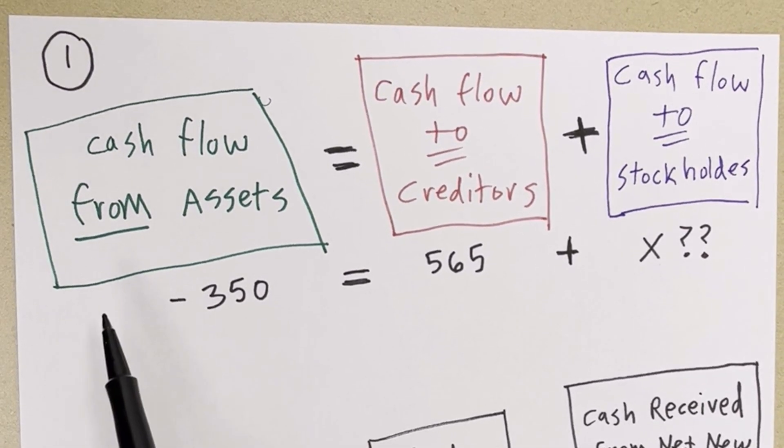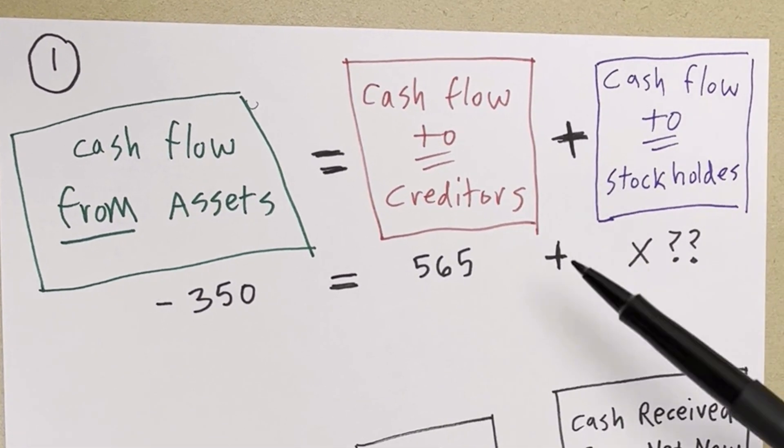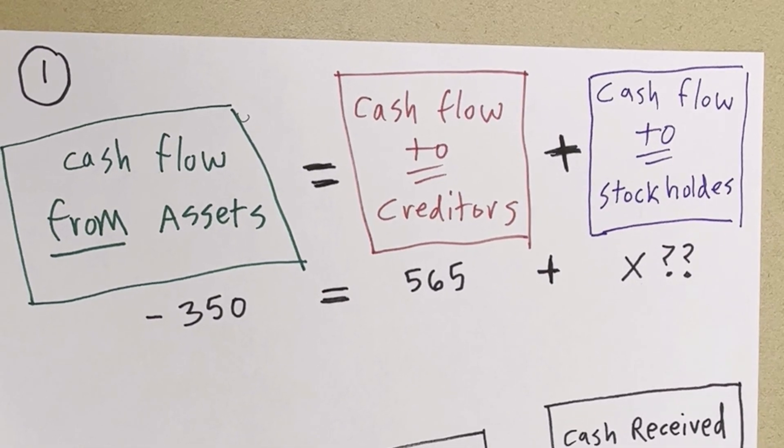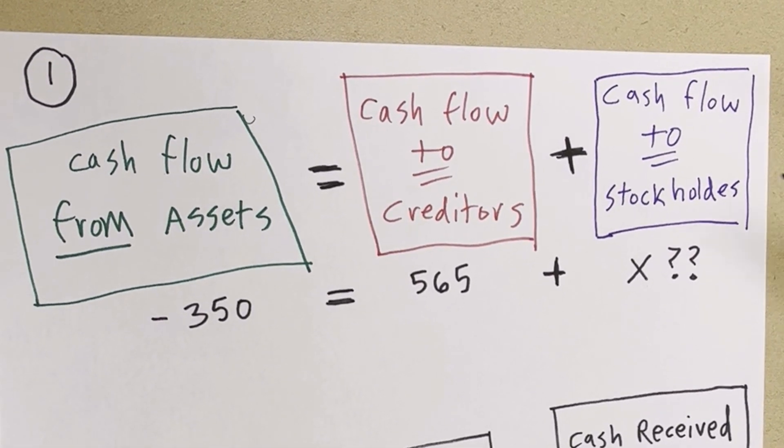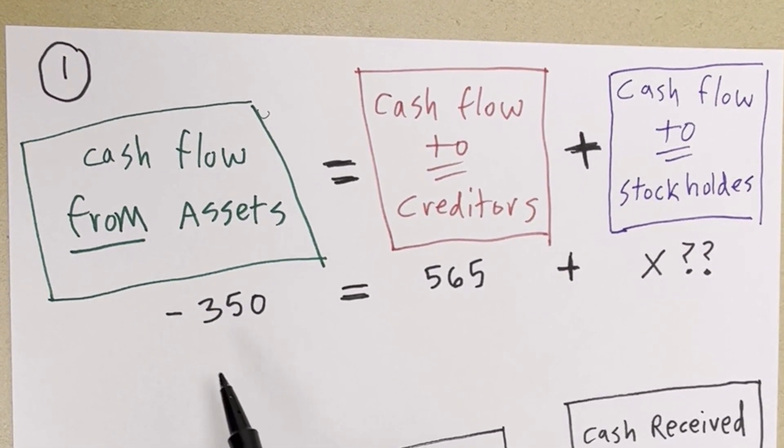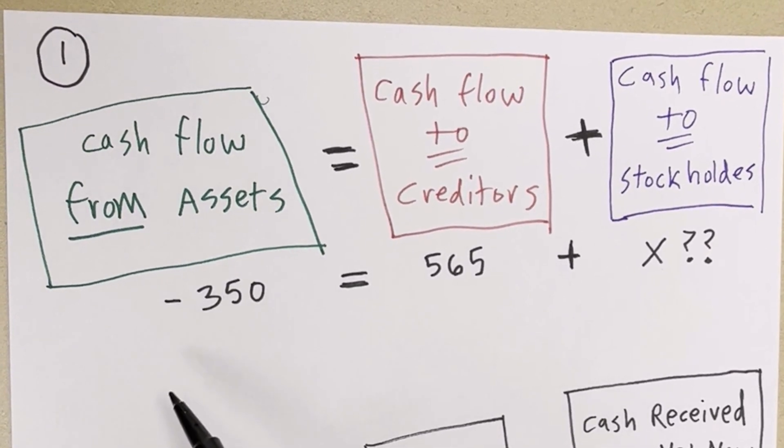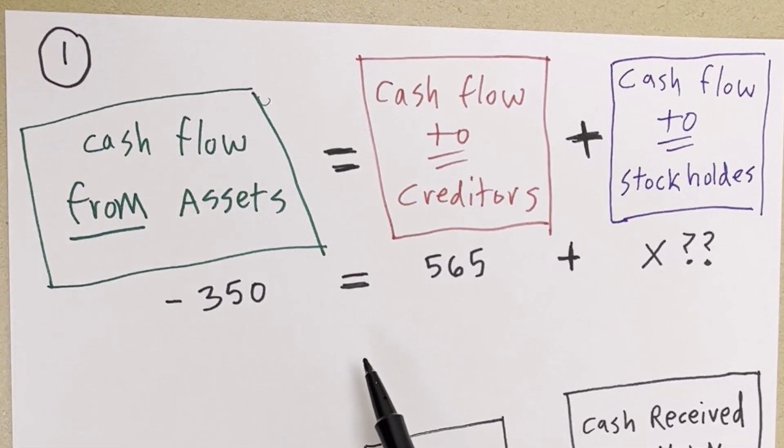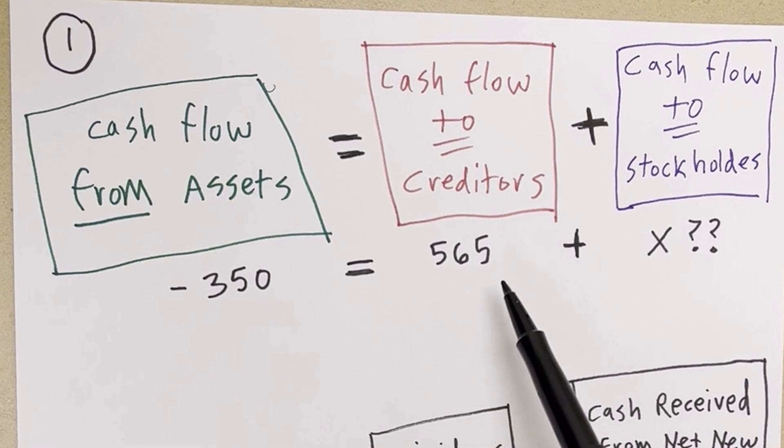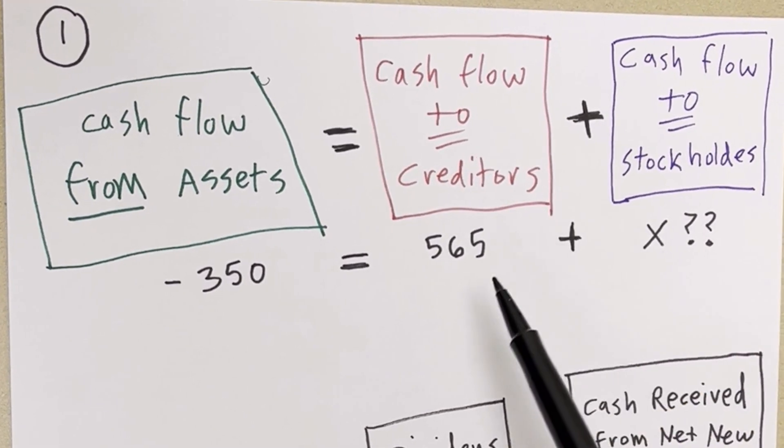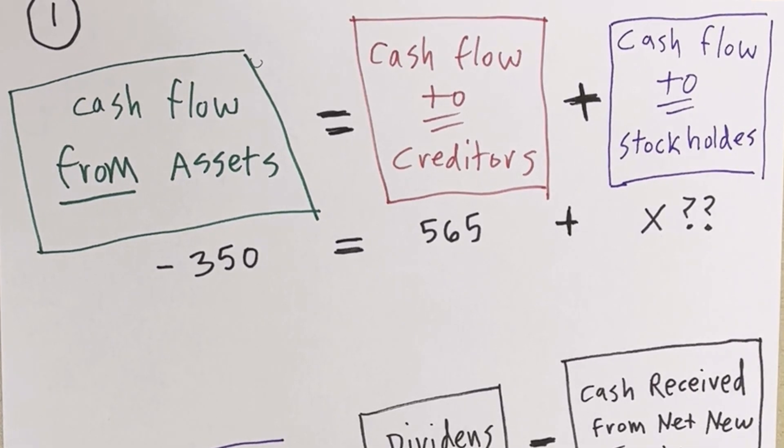Look, we have cash flow from assets equals cash flow to creditors plus cash flow to stockholders, and you already have the number or you've solved for it, minus 350, that's the cash flow from assets, equals 565 bucks paid out to creditors plus, we don't know this. Well, guess what? We get to do some algebra.